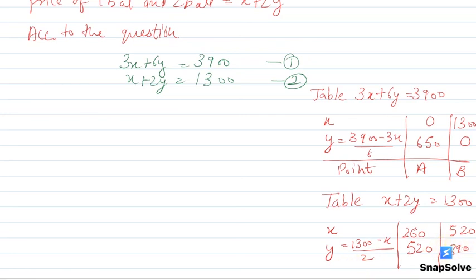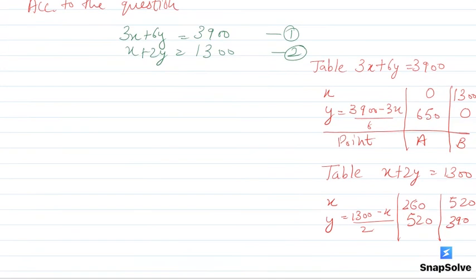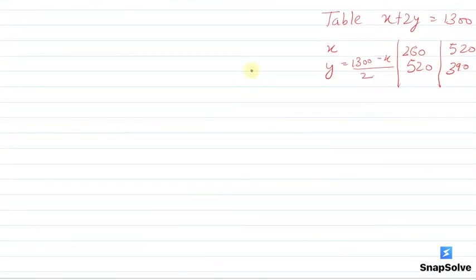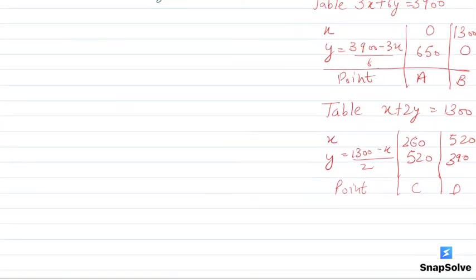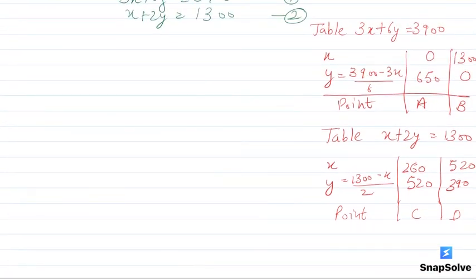Same way we will have these points. We have to label these points. This point is C, this point is D. We will have to represent these points, plot them. It will be easy to detect both coordinates to represent them in the graph.